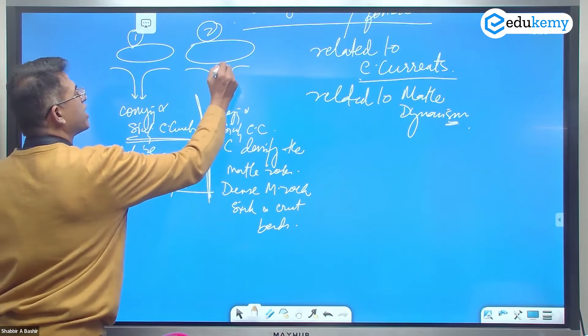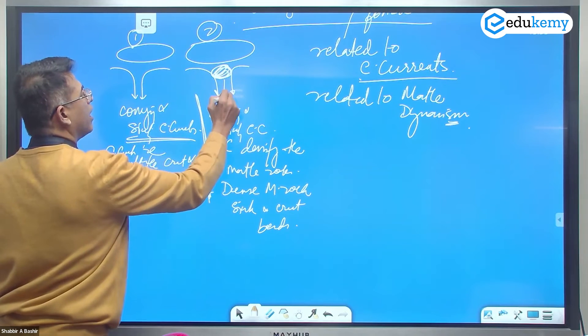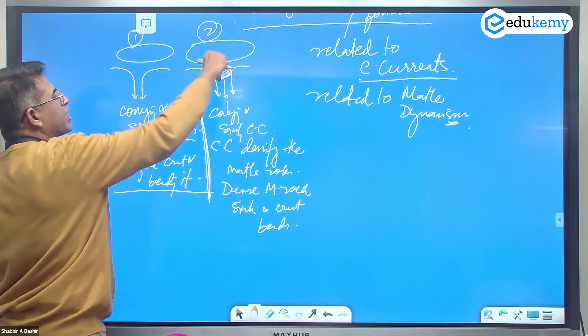So this is densification and this is sinking. When you come down, the crust bends.